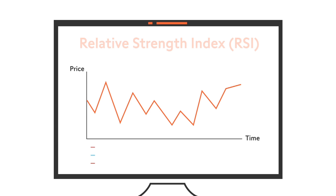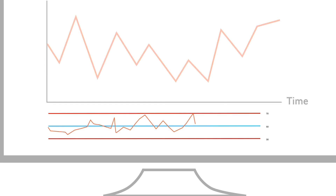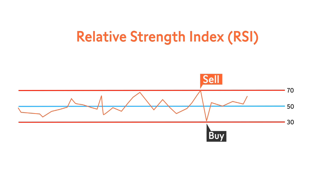Often you can use the RSI indicator, included in your trading platform, to explore whether a given price movement is firm. In general, when the RSI passes above 70, the asset may be overbought, implying that it is time to sell, and an RSI below 30 is often an indication to consider a long trade.